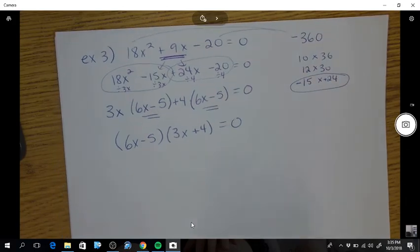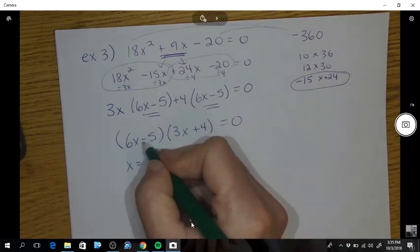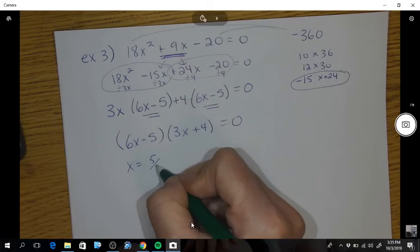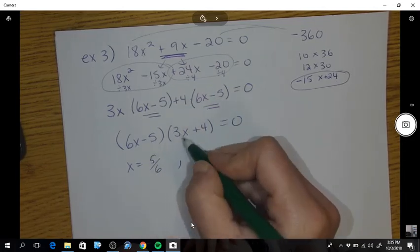So what are your solutions? Opposite division. So 5 sixths, negative 4 thirds.